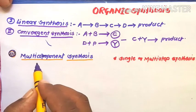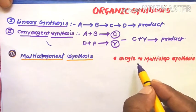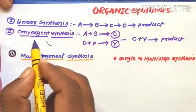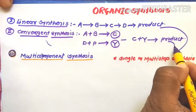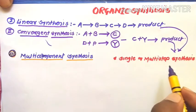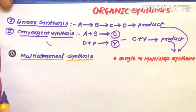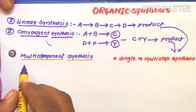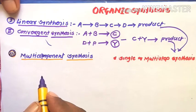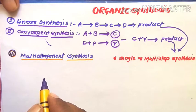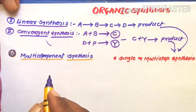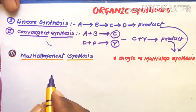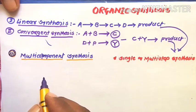We will discuss which synthetic route is most suitable and represents a green synthetic route. We will compare multi-component synthesis with single or multi-step synthesis, such as linear and convergent synthesis. When a reaction proceeds with more steps, there is a greater chance of errors, meaning more byproduct formation.